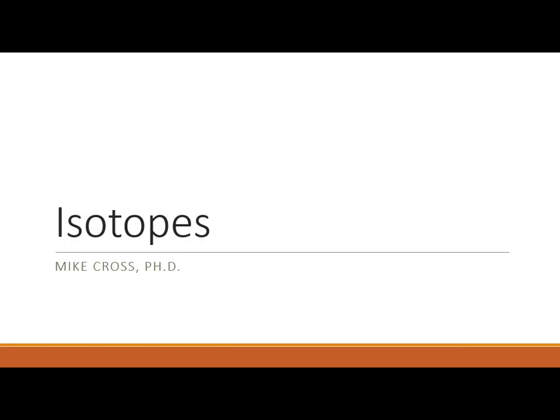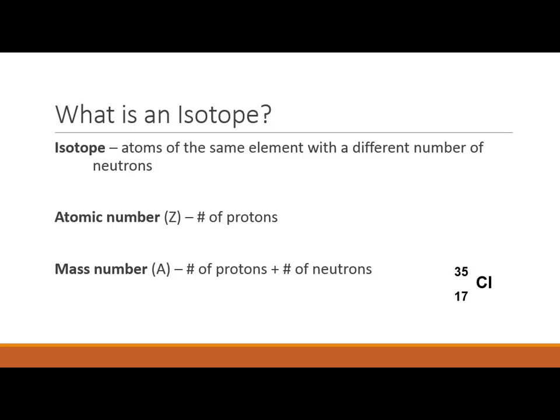Now that we have a basic understanding of what atoms and elements are, let's talk about isotopes in particular, which is a term you may have heard before, especially in conjunction with something like nuclear fallout. Isotopes are atoms of the same element with a different number of neutrons — a slightly different version of the same element.